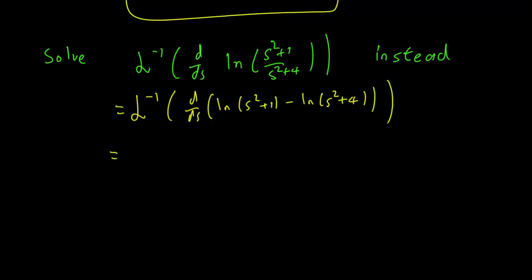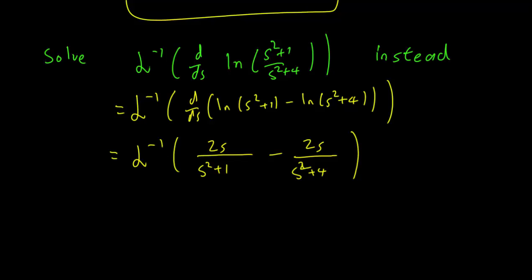The derivative of a log is just the function's derivative over the function itself. So the derivative of log(s²+1) is going to be something over s²+1, and you take the derivative of the top, so it becomes 2s/(s²+1). And the derivative of log(s²+4) has s²+4 in the bottom, and the derivative of s²+4 is 2s, so it becomes 2s/(s²+4). Therefore the derivative of log((s²+1)/(s²+4)) is 2s/(s²+1) minus 2s/(s²+4).